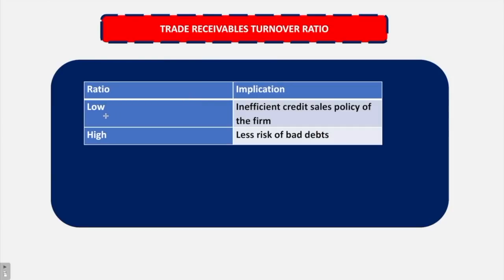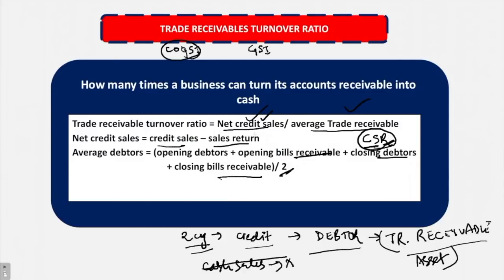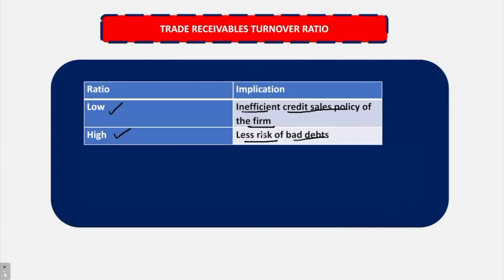What does trade receivable turnover ratio tell us? A low ratio means the firm's credit sales policy is inefficient — you have a lot of debtors from whom you have to receive money. A high ratio means there is less risk of bad debts because the proportion of credit sales is much more than average trade receivable, meaning you do not have a lot of outstanding receivables. An example of banks can be used — their trade receivable turnover ratio may be low when they have loaned money to people who are not paying back on time.